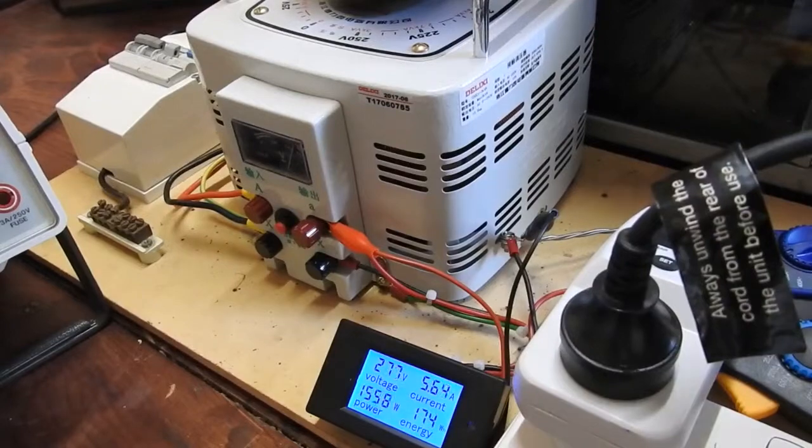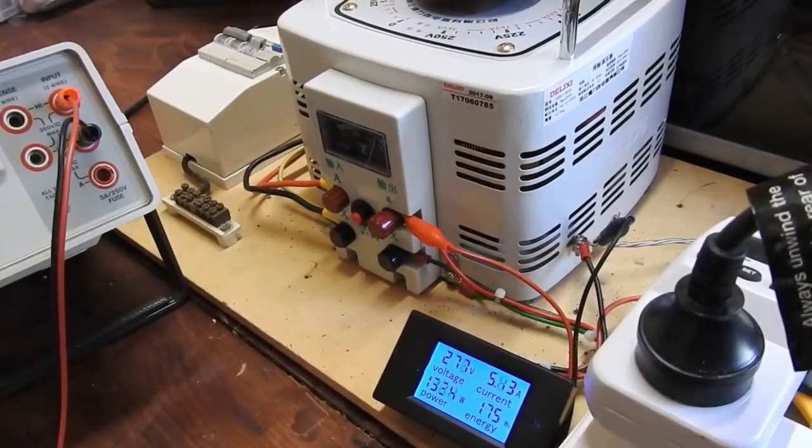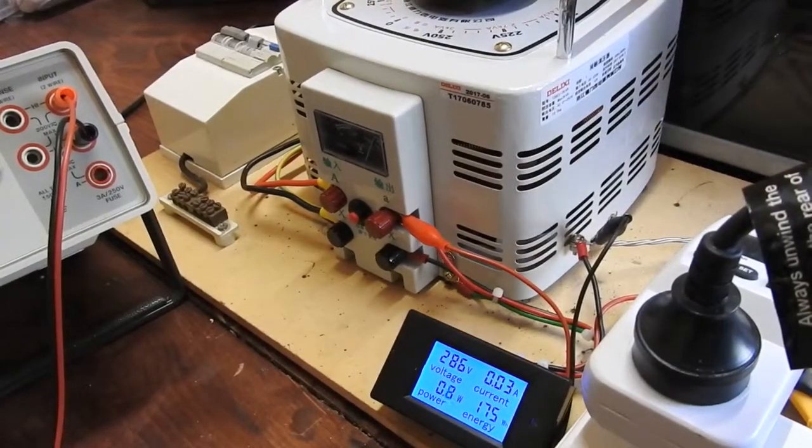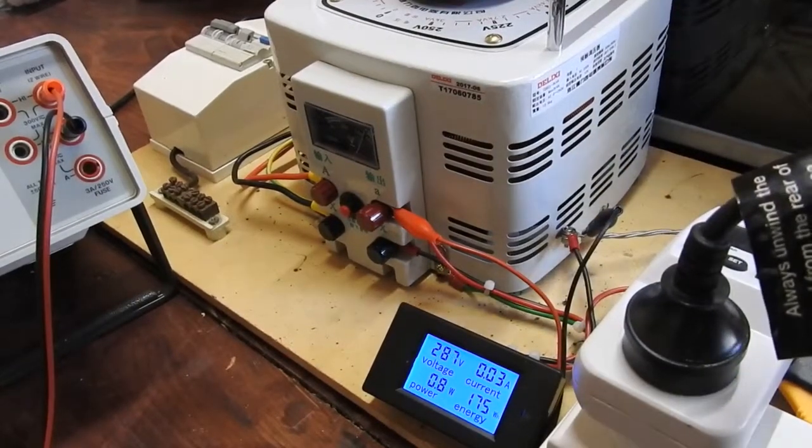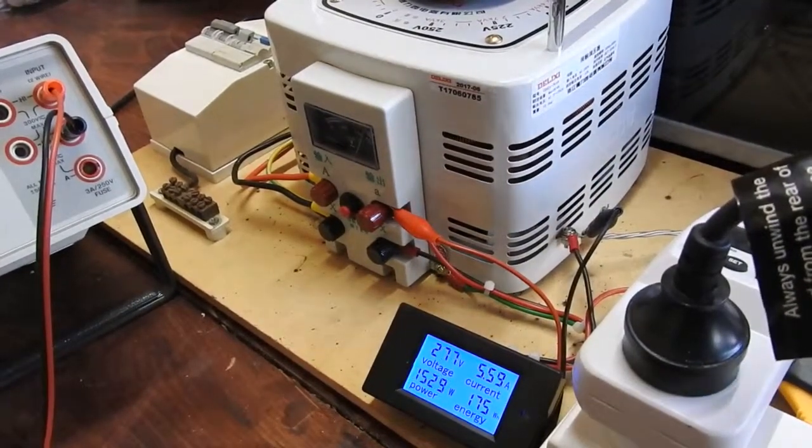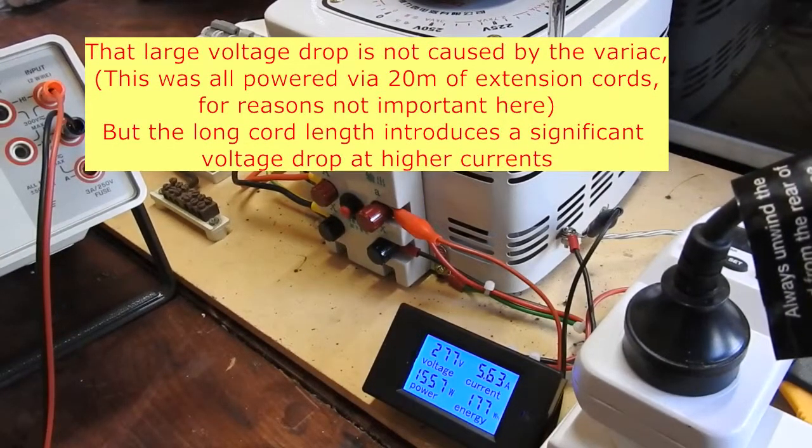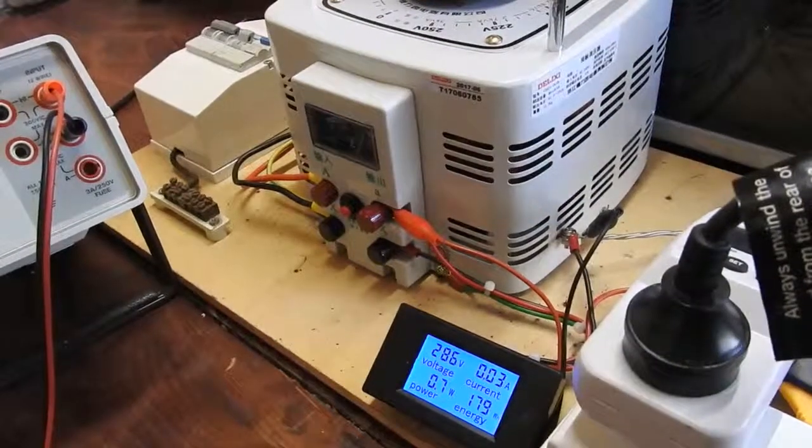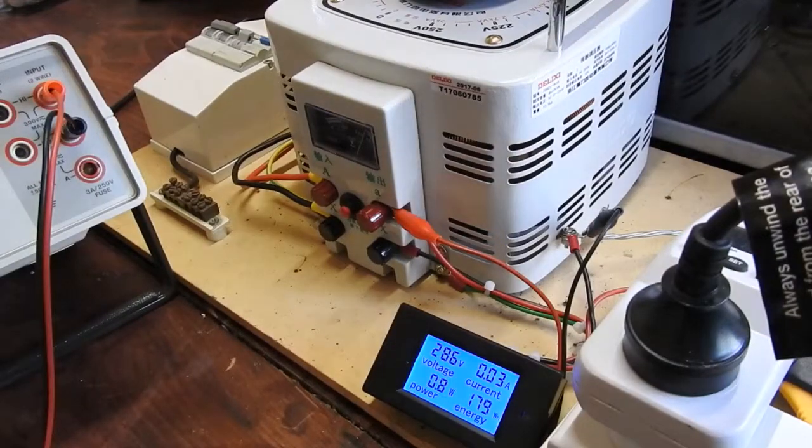Max voltage I can get out of it. 276. That's with a load. If I turn this off. 285 with no load. I turn on the load. It drops down to 276. But that's drawing 1500 watts, 30 volts. So there we have it. Variacs and power meters. A nice combination.